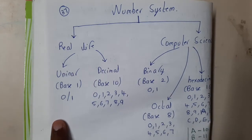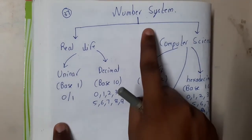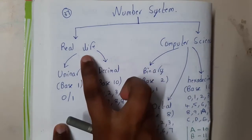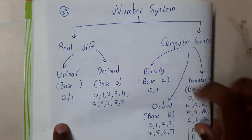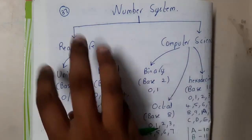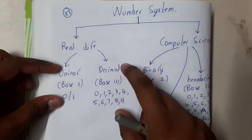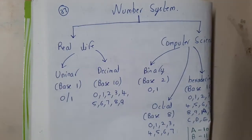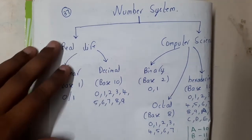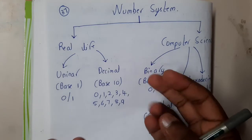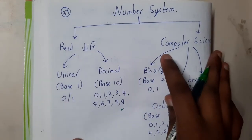Before going into the concepts, number systems are divided into two parts: the real-life number system and the computer science number system. In real life we use unary or binary — counting based on 0 and 1 — and decimal, counting 0, 1, 2, 3, 4, which we already know.